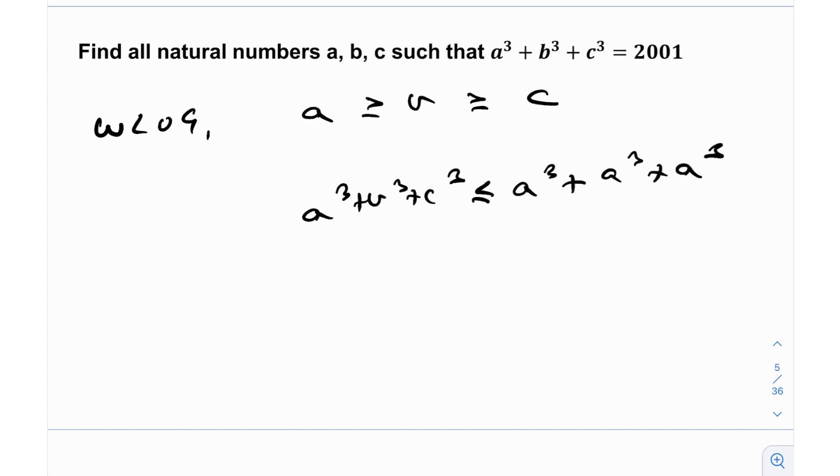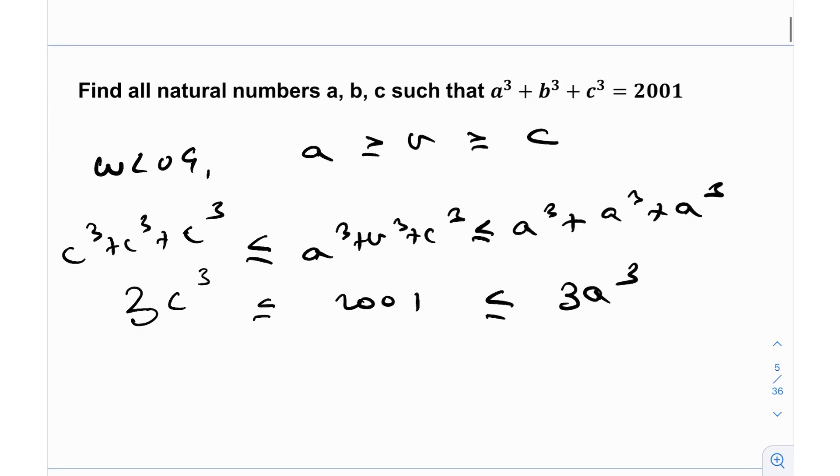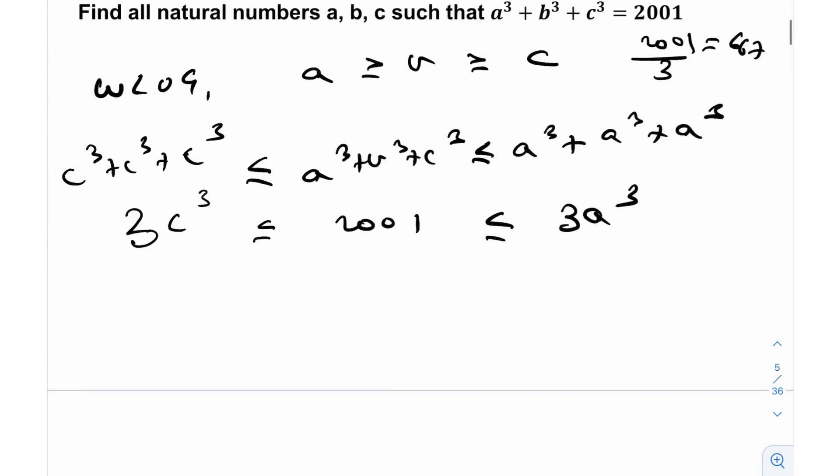For example, A³ + B³ + C³ would then be less than or equal to A³ + A³ + A³, because B³ will be less than or equal to A³, and same with C³ as well. But at the same time, this will be greater than or equal to C³ + C³ + C³, because C is the smallest of three, and similarly A is the largest of the three. So this A³ + B³ + C³, which is 2001, is bounded between two values, between 3C³ and 3A³.